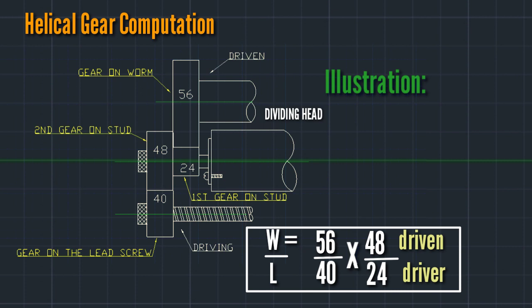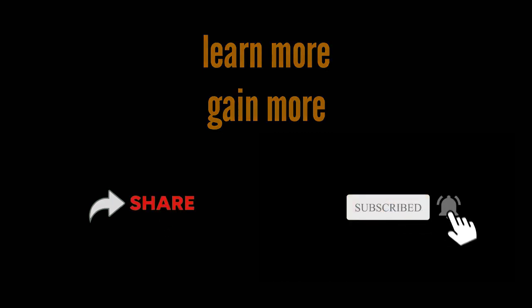Gear on worm is 56, first gear on stud is 24, second gear on stud is 48, and gear on leadscrew (driving) is 40. Hope you learned a lot — thank you for watching.